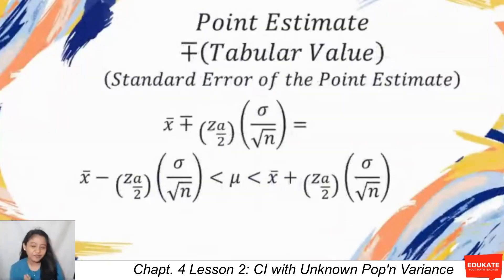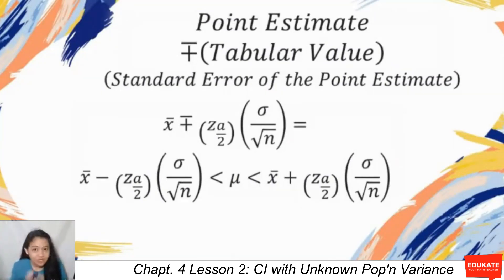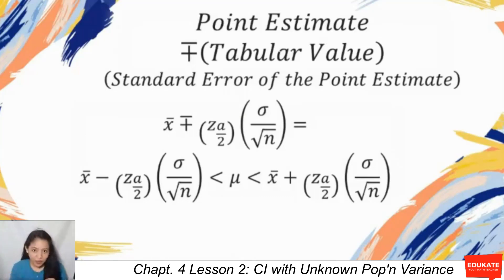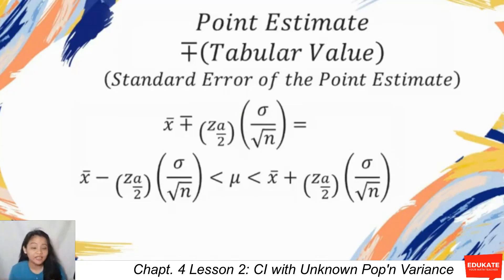Recalling from the previous lesson, we know that the confidence interval is constructed by your mean plus or minus the Z value from the Z table — Z sub alpha over 2 — times the standard deviation over the square root of n, which is your standard error of the point estimate. In this expression, the tabular value depends on the sampling distribution of the sample mean. The tabular value to use when the population variance is known is taken from the standard normal distribution.